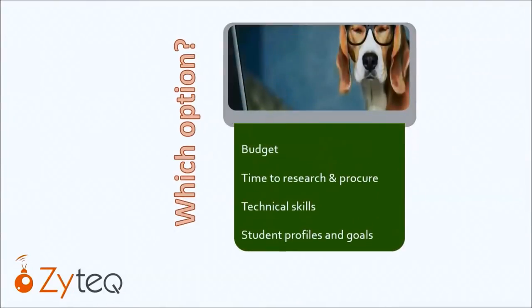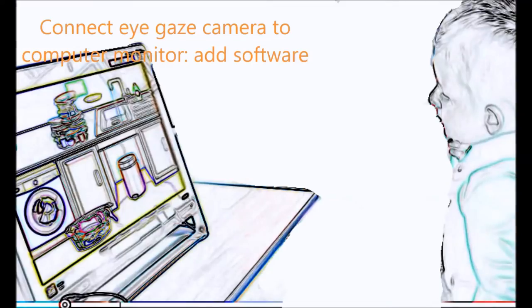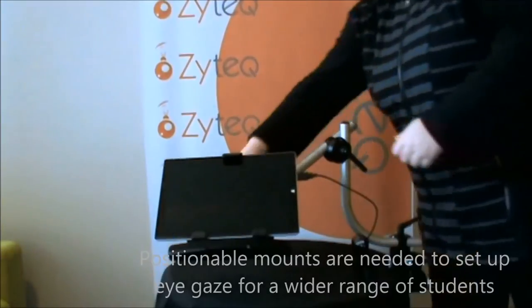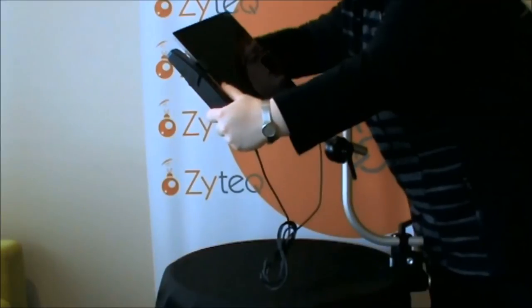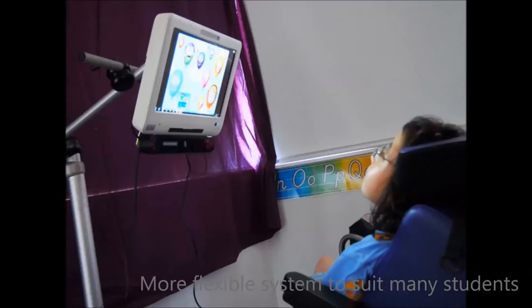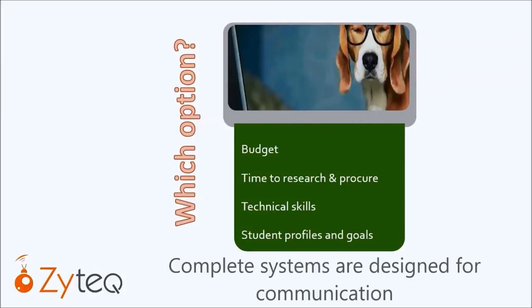Which option is going to work best for your education setting? Budget is often a priority. These systems range from around $2,000, and for this you get the bare essentials — an eye gaze camera and one software package or activity suite. The next step up is a system which can be positioned flexibly and is useful for a wider range of students. With additional software, this can take the package up to around $4,000 to $5,000 for the do-it-yourself kits, and to these packages you still need to add your own computer or tablet. Pricing for the complete systems is over $10,000.